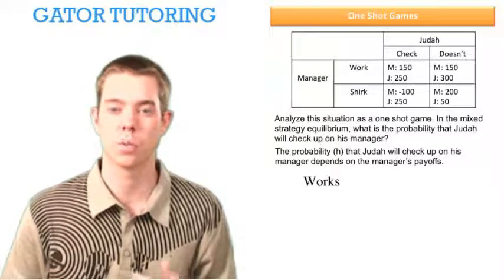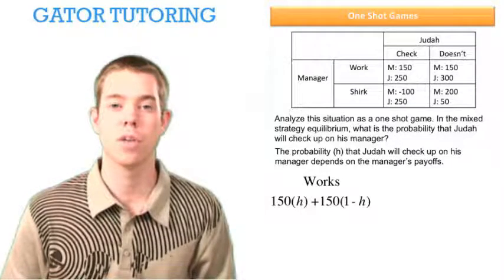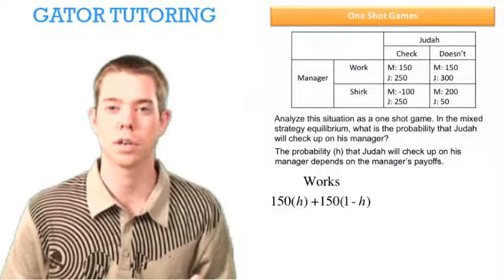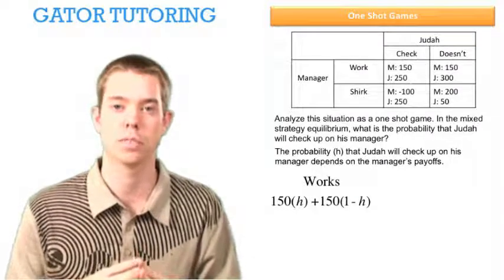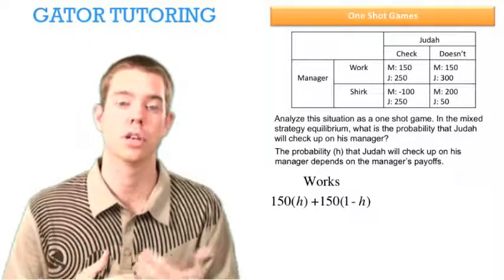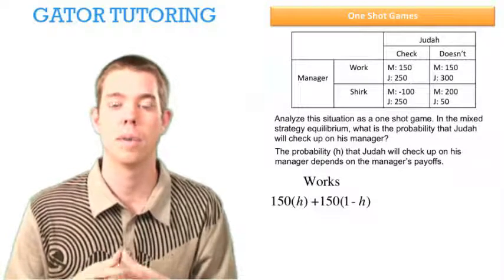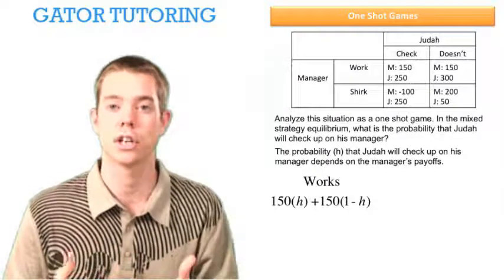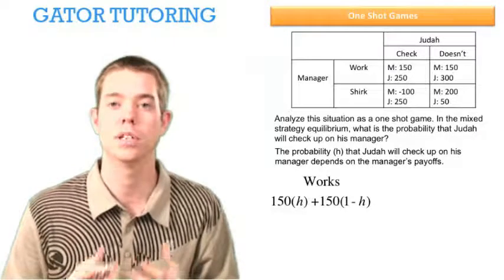Well, the manager had two choices. He could either work or shirk. When he works, let's look at his payoffs. We know that he's going to make 150 no matter what when he's working. So H represents Judah coming in and checking on his manager. So H is paired with 150 because when he's working, Judah comes in and checks on him and says, you are working. Here's your 150. 1 minus H represents Judah not checking up on his manager, but the manager worked in this case. So he still made 150.